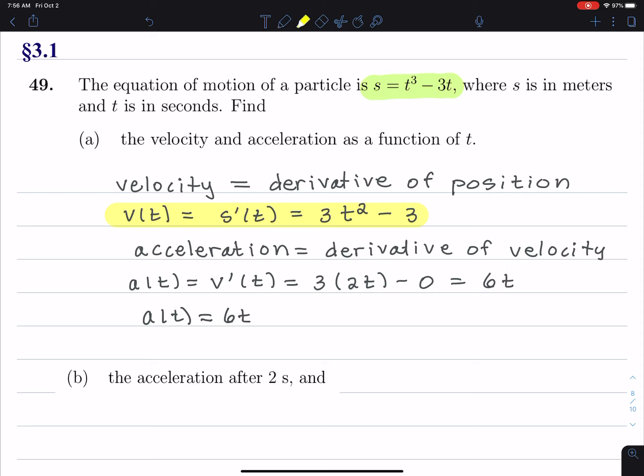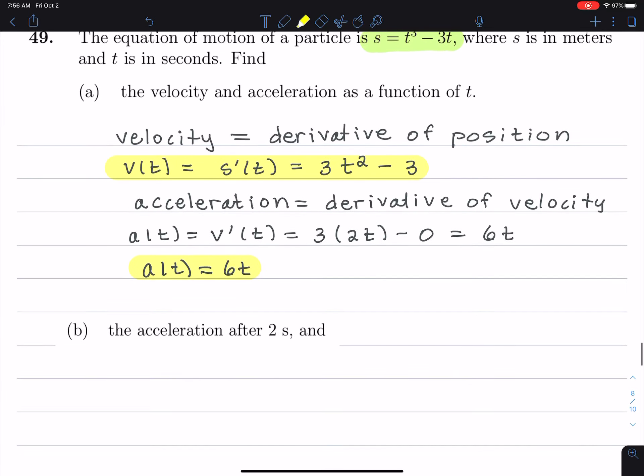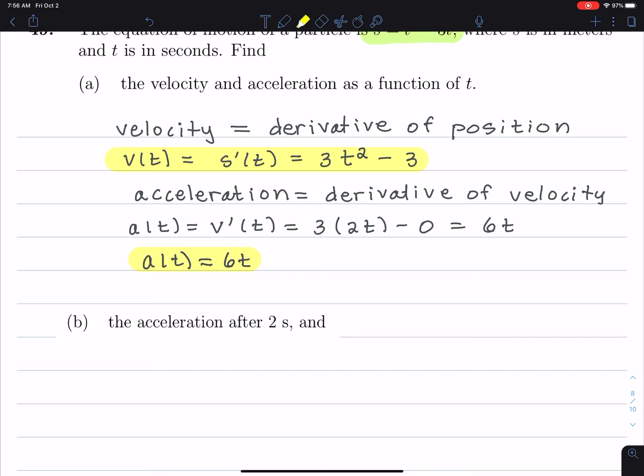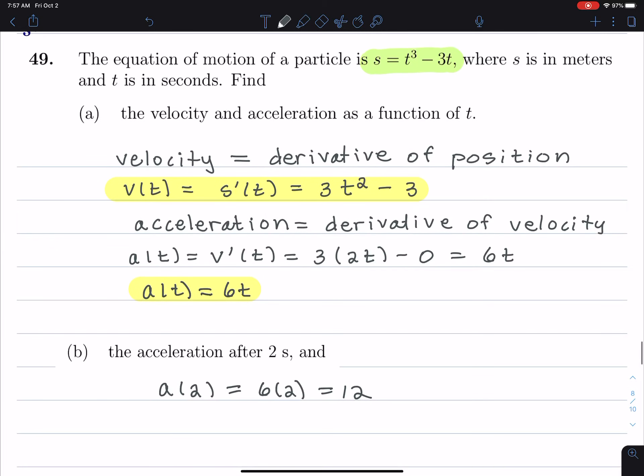Highlight that. All righty. Now, we find the acceleration after 2 seconds. So after 2 seconds, I have A of 2 is 6 times 2, which is 12. The units for acceleration are meters per second squared.